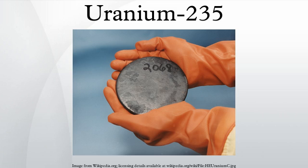Uranium-235 has a half-life of 703.8 million years. It was discovered in 1935 by Arthur Jeffrey Dempster. Its nuclear cross-section for slow thermal neutrons is about 504.81 barns. For fast neutrons it is on the order of 1 barn. Most but not all neutron absorptions result in fission; a minority result in neutron capture, forming Uranium-236.